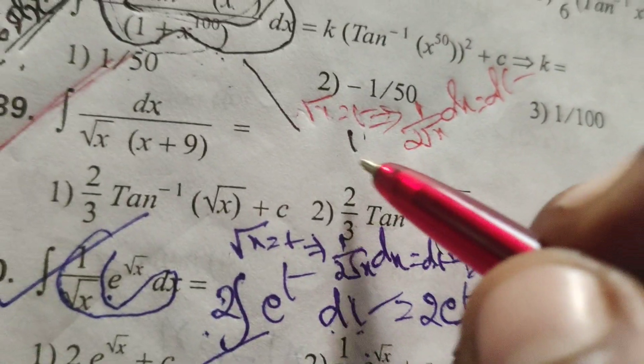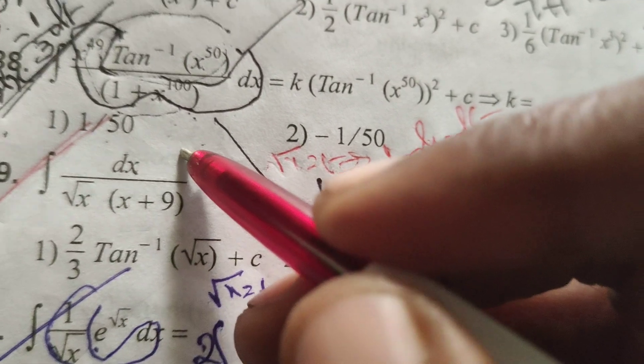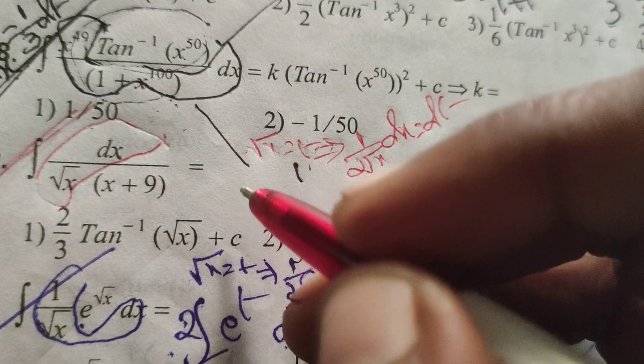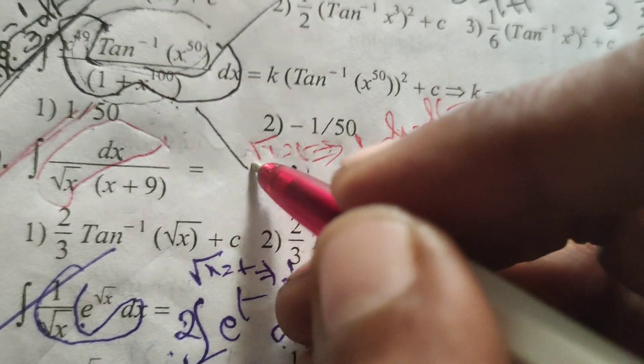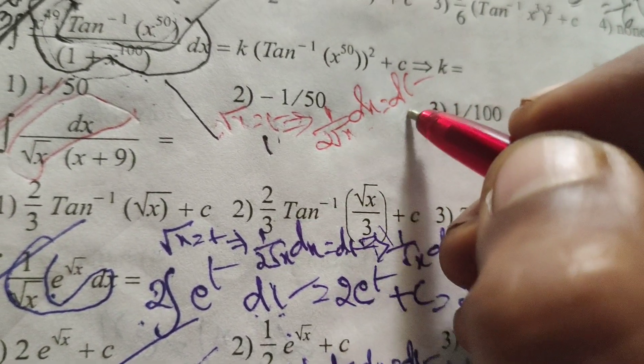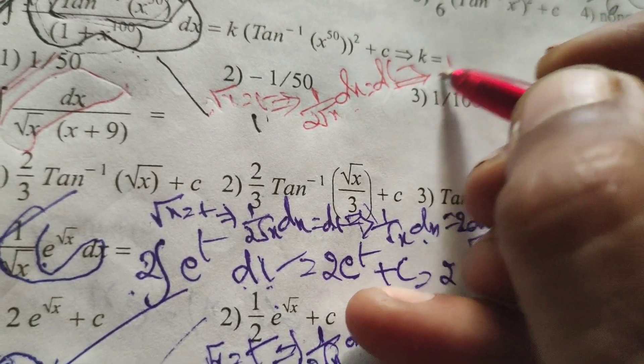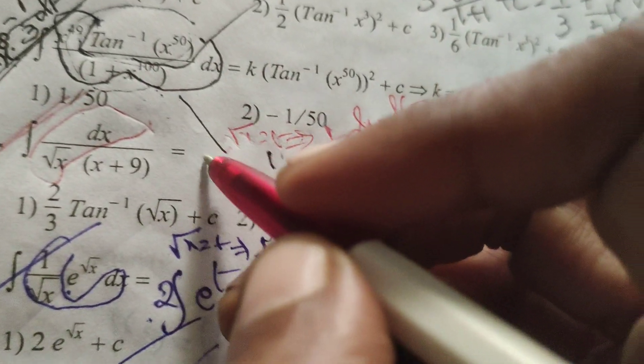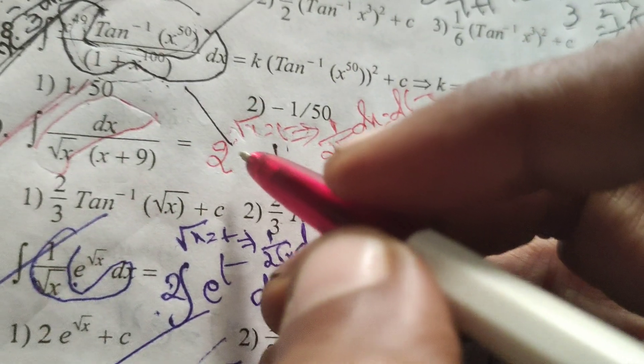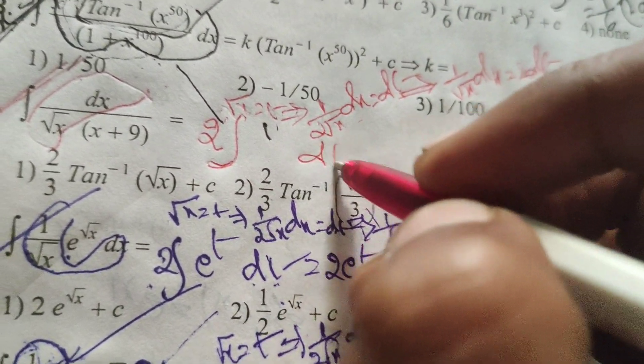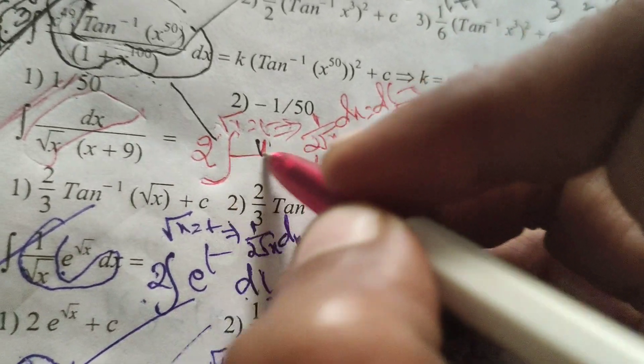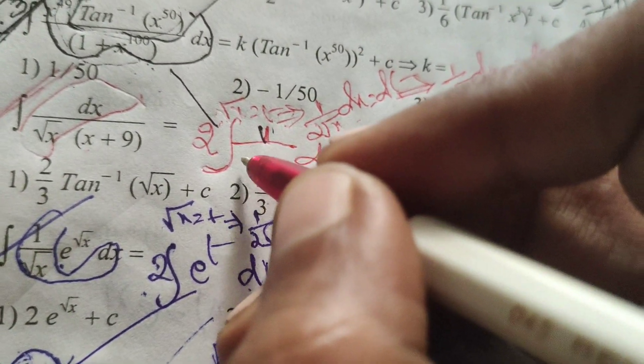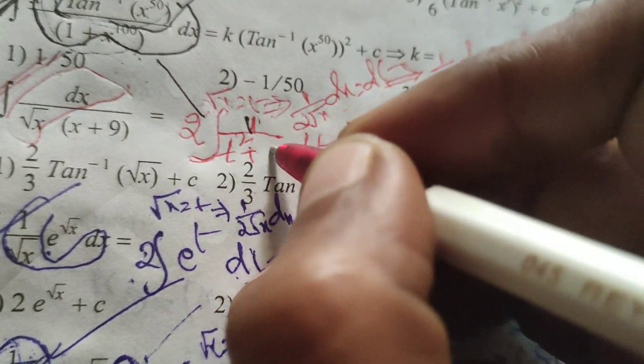Now in the substitution, 1 by root x dx becomes 2 dt. Therefore, we write 2 before the integration, integral of dt by t square plus 9, where root x equals t, so x equals t square.